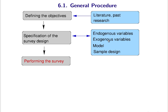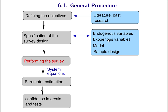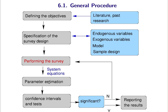Once you have finalized the design, you perform the actual survey. Once you have all the data, you can do parameter estimation, confidence intervals, and tests — all the statistical machinery we learned in previous lessons. Finally, the output: if it's significant, you report the results. If it's not significant, you can also report the results by saying we cannot reject our null hypothesis — remember, the null hypothesis can only be rejected. You can also try getting more data by performing another survey and iterating this process.